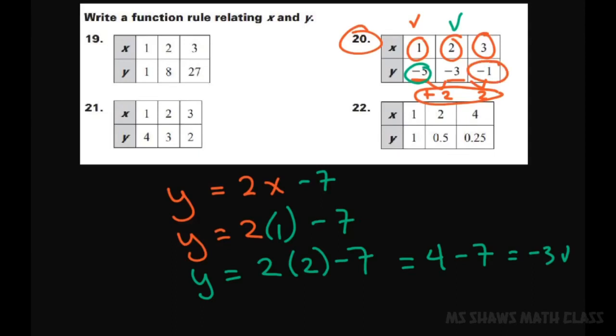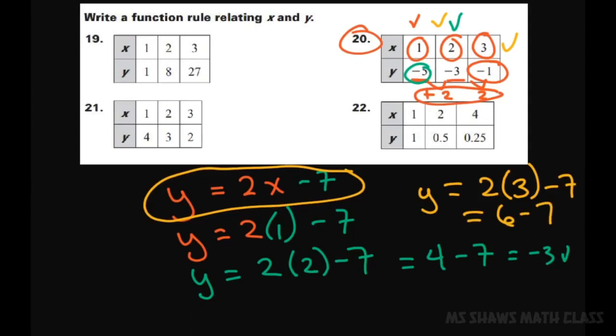So we have Y. I'm using this formula based off the first one I did. Equals 2 times your X, which is 3, and then we're going to do minus 7. So that would give you 6 minus 7, which equals negative 1. So there's your rule for that.